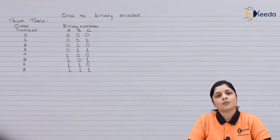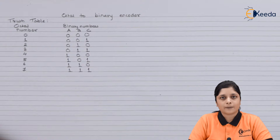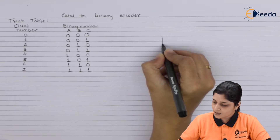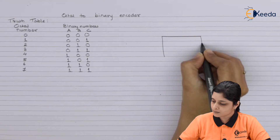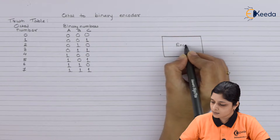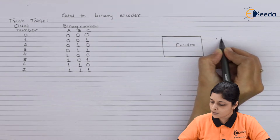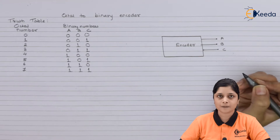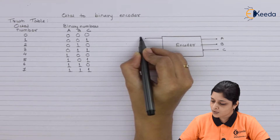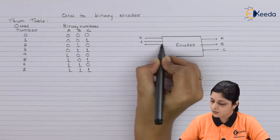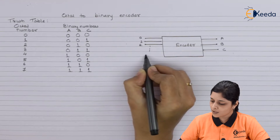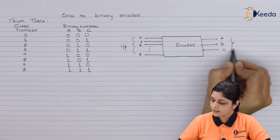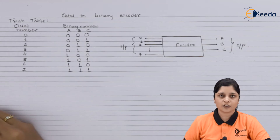The next step is to get the block diagram for the encoder. Suppose this is the block diagram — for 8 inputs from 0, 1, 2 up to 7. This side is the input side and this side is the output side of the encoder.